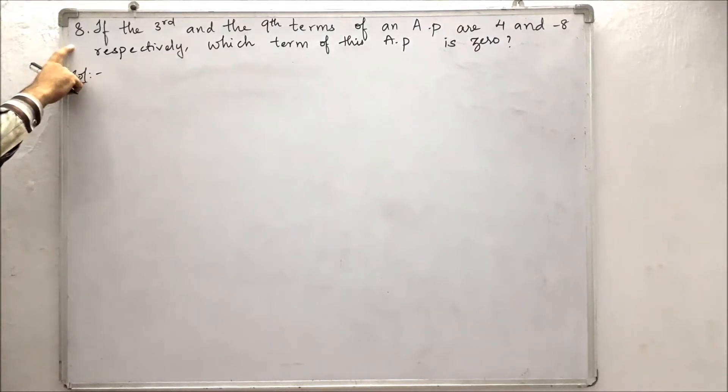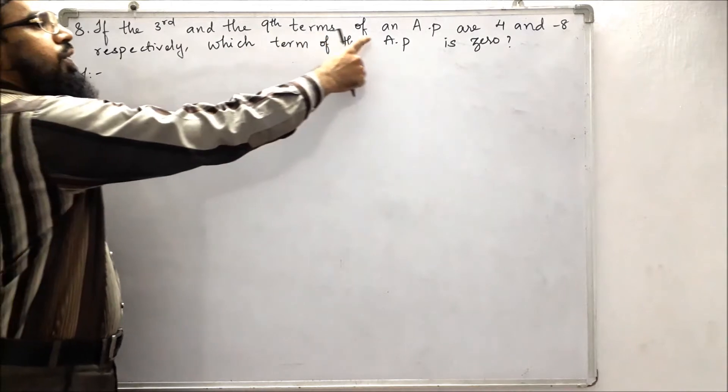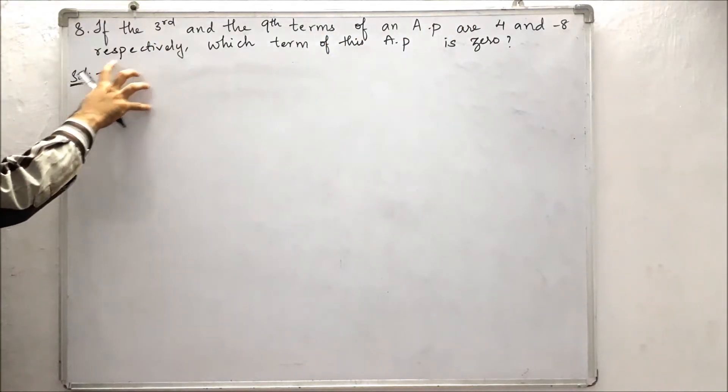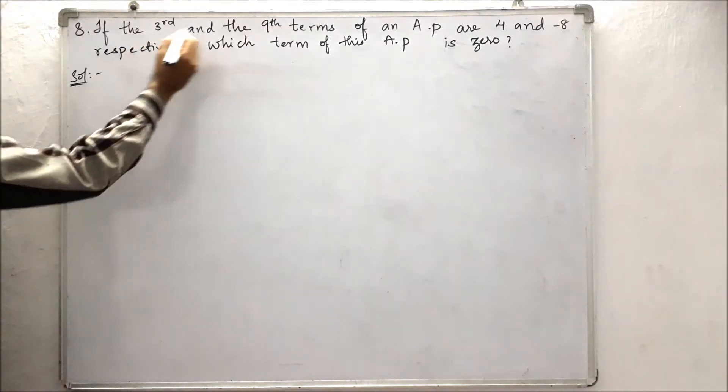This is the eighth problem. They said that if the third and the ninth terms of an AP are 4 and minus 8 respectively, which term of this AP is 0? So they have given the two terms.